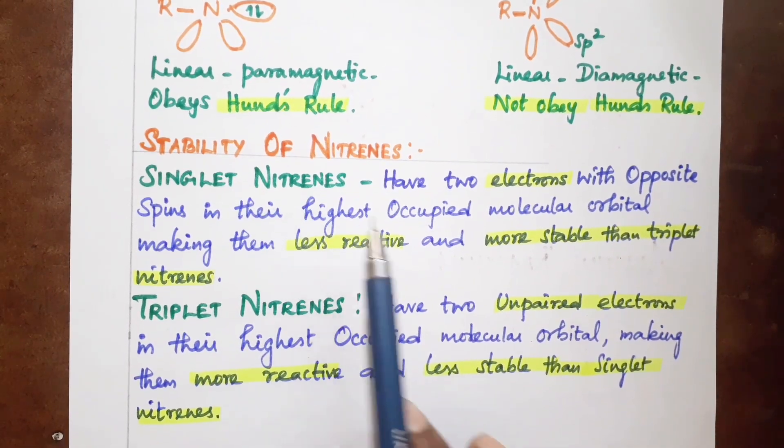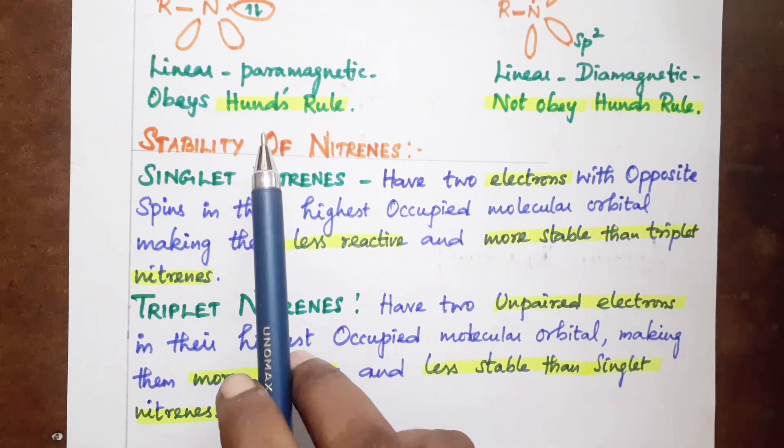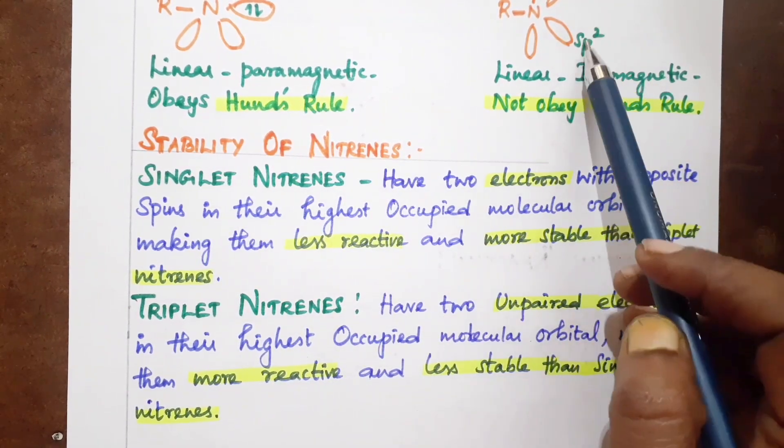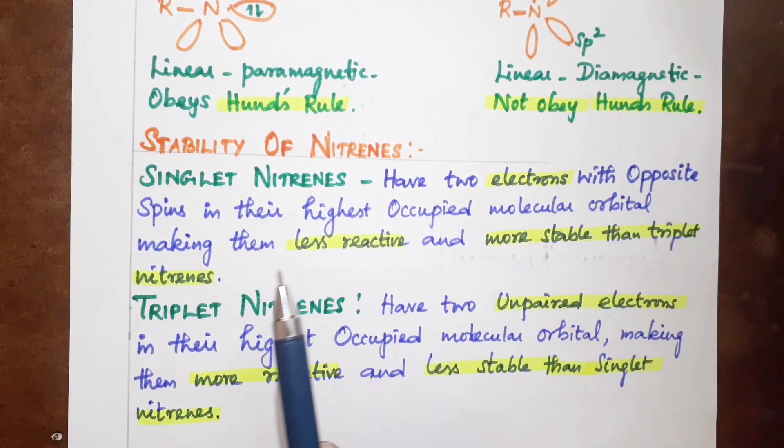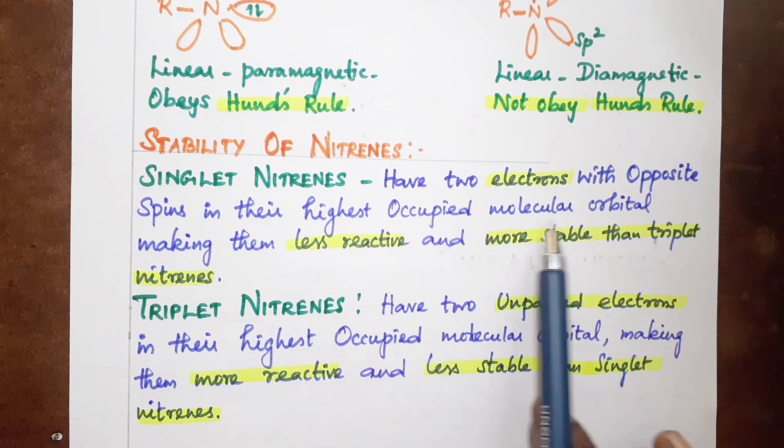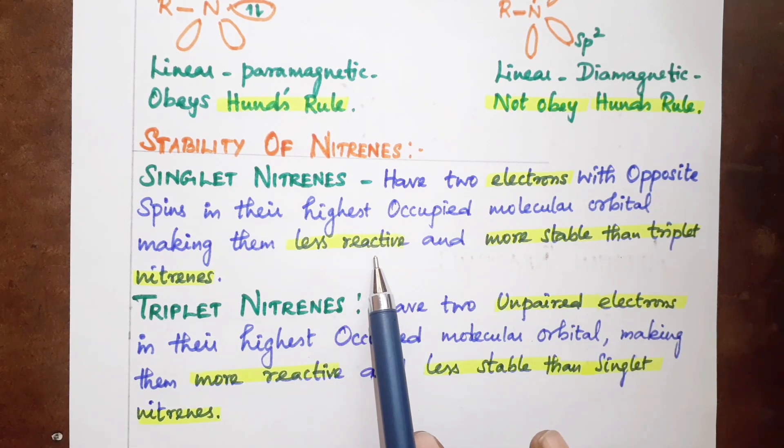Stability of nitrenes: Singlet nitrenes have two electrons with opposite spins in the highest occupied molecular orbital, making them less reactive and more stable than triplet nitrenes.